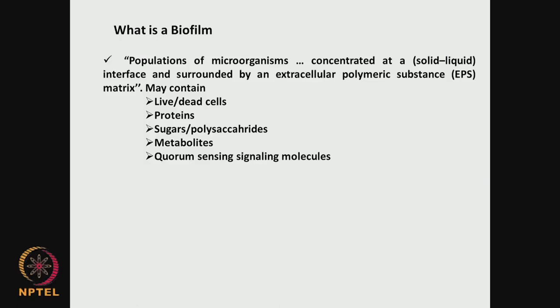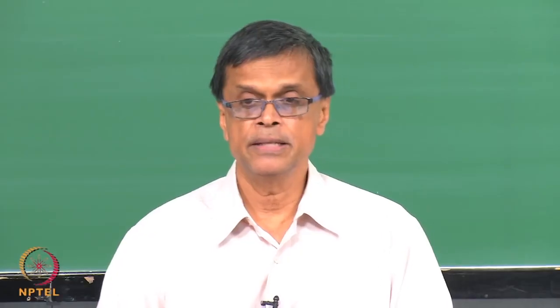Some of the cells may be at a different genetic level — they might have stopped growing at a faster rate — which may lead to persistent cells or drug resistant cells. The formation of biofilm is a very serious issue on medical implants, which can lead to chronic inflammation, infection, and rejection of the material.